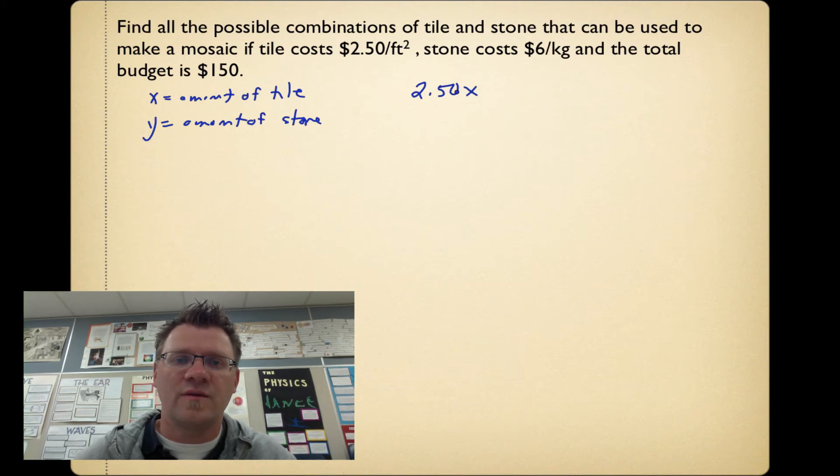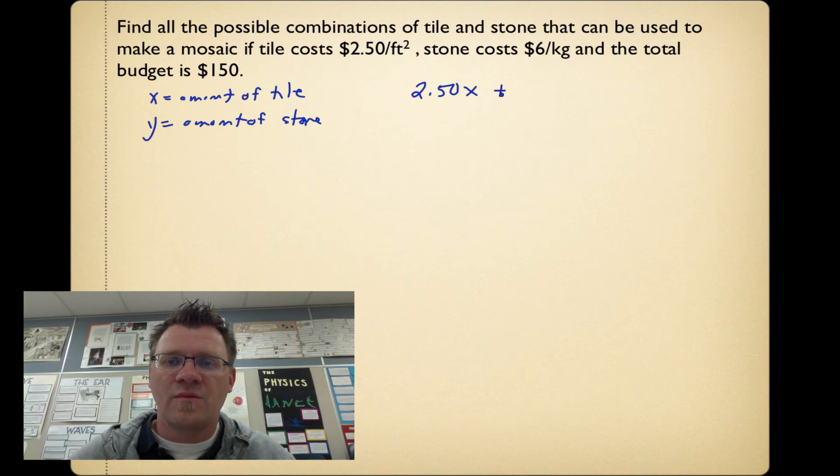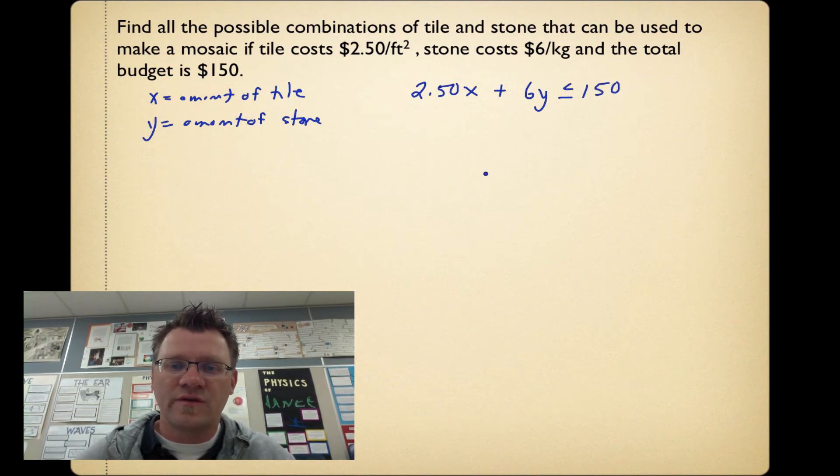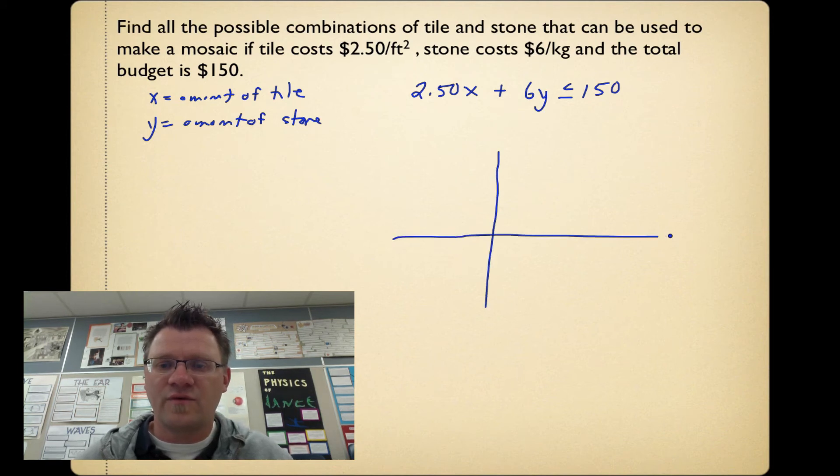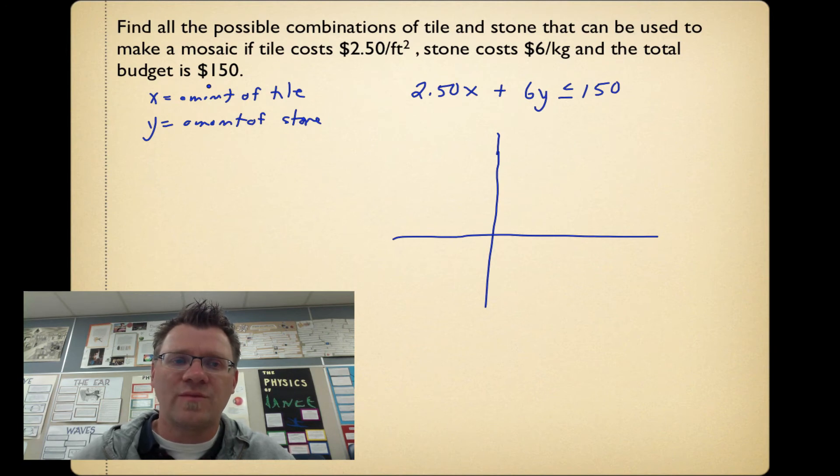Plus $6 times y, and that has to be less than or equal to 150 because we're talking about a budget. So now we can graph this thing. To graph it, we're going to draw our coordinate plane. But knowing that we are talking about amount of tile and amount of stone, we're only going to be working in the first quadrant because we can't have negative amounts of tile or negative amounts of stone.